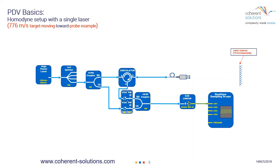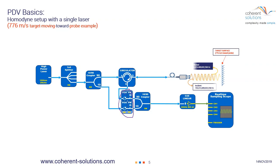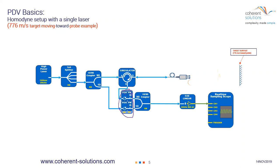Next we're going to look at the homodyne setup with an actual target that's moving. The dual-channel variable optical attenuator and inline optical power meter comes in very handy for adjusting the various levels before you mix them together — this is very important in PDV. We've got a target moving towards the probe at 776 meters per second, which corresponds to a Doppler shift of approximately 1 gigahertz when working at 1,550 nanometers.